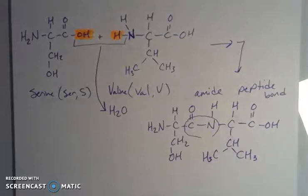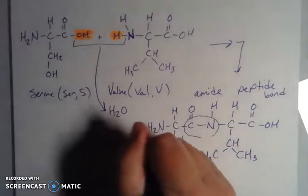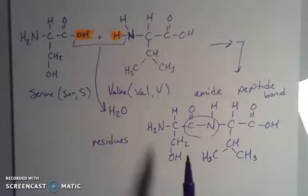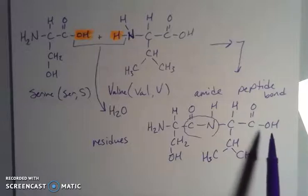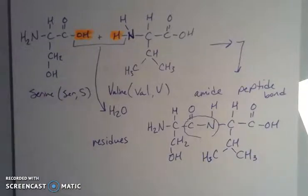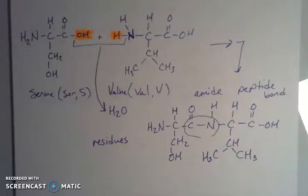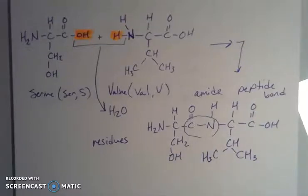This peptide bond is what holds together the individual amino acids, which are called residues. Each individual amino acid in a protein is called a residue — that's just the term used. I can keep adding amino acids on in the same way: use the hydroxyl group on one end and the amine group of another amino acid, do a dehydration to remove water, and tack another residue on. That creates another peptide bond, and we'll have a long string — peptide chains.